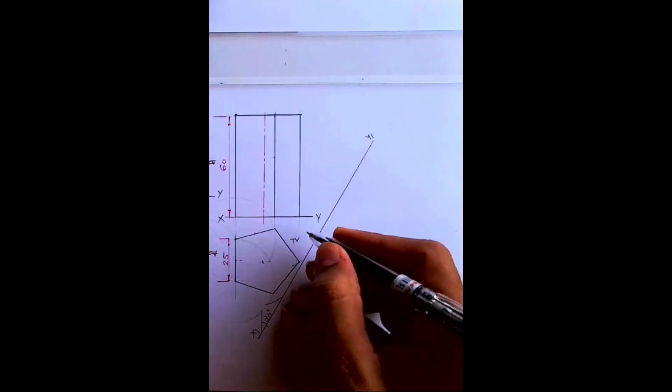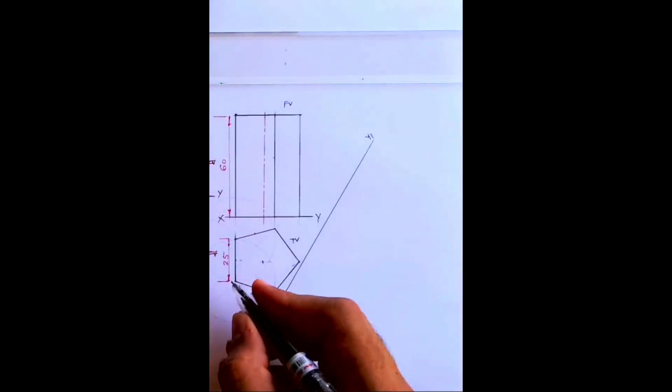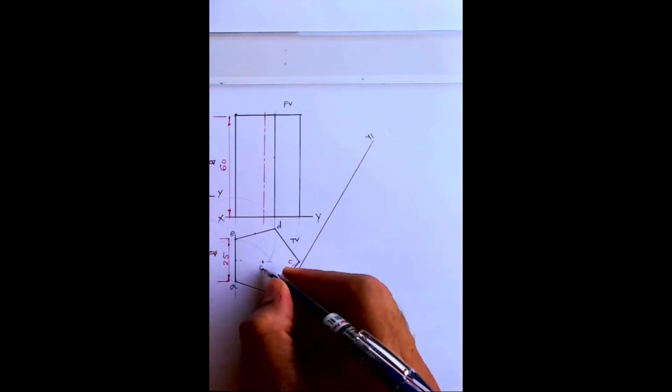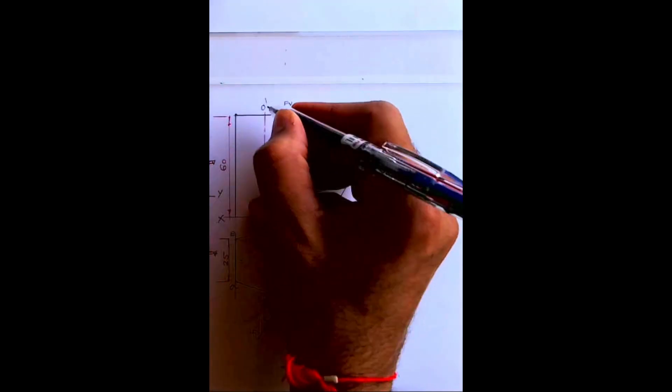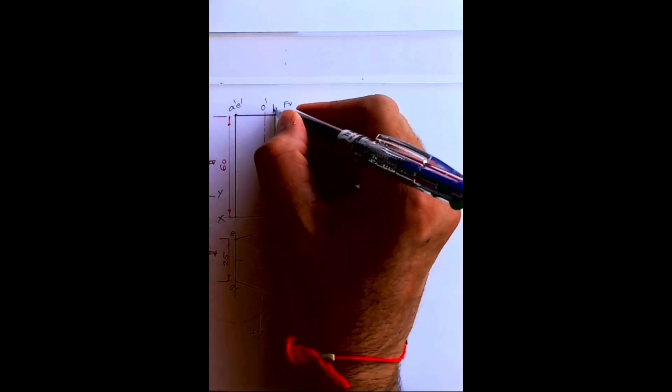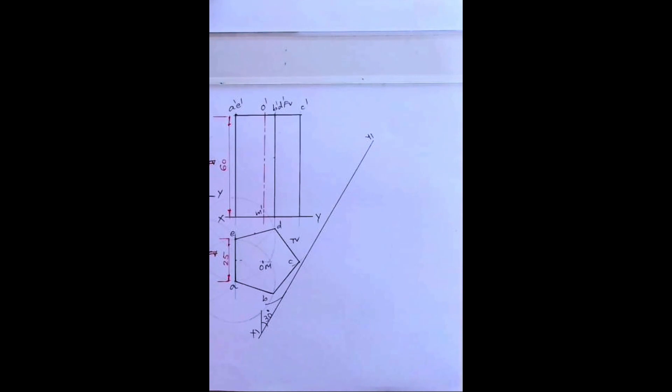Of a pentagonal prism and this is front view. This is A, B, C, D, E, O, M, X, S, O dash, M dash. This is A dash, E dash, B dash, D dash, C dash.